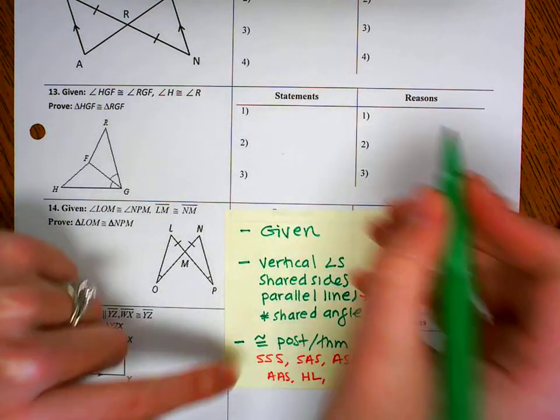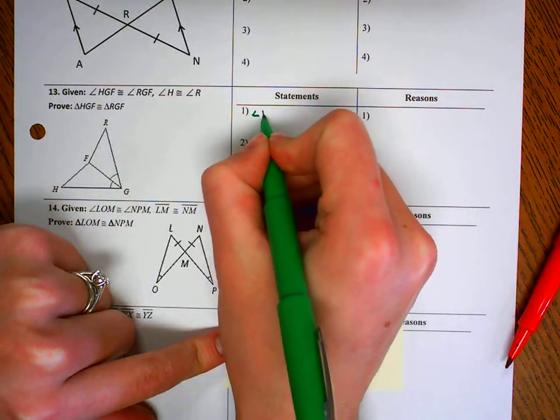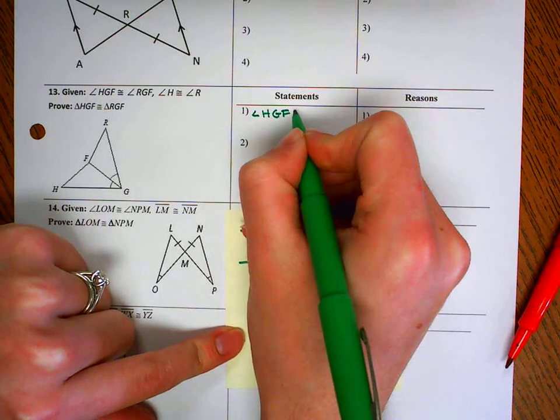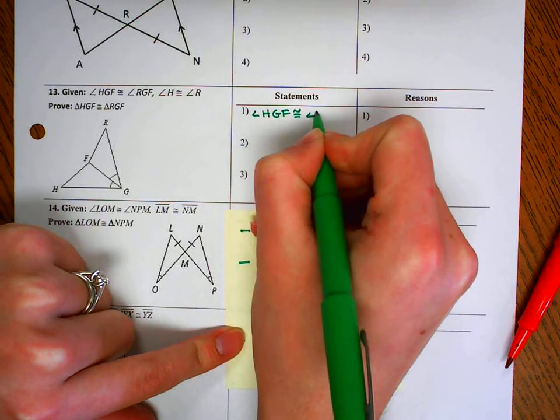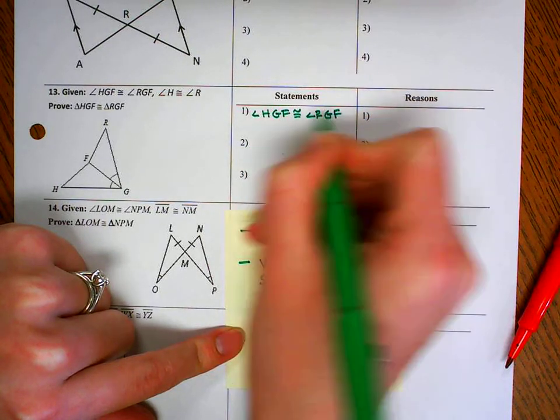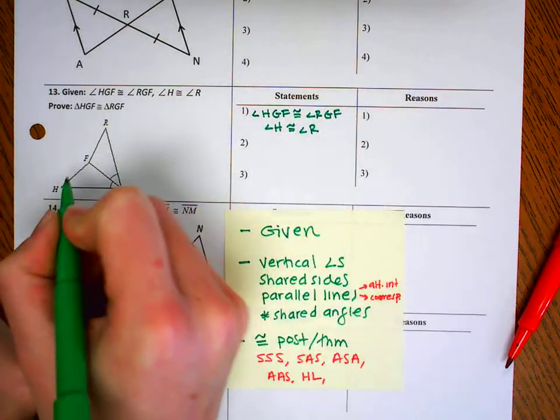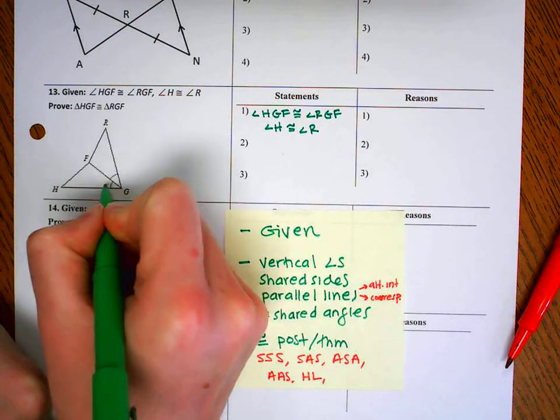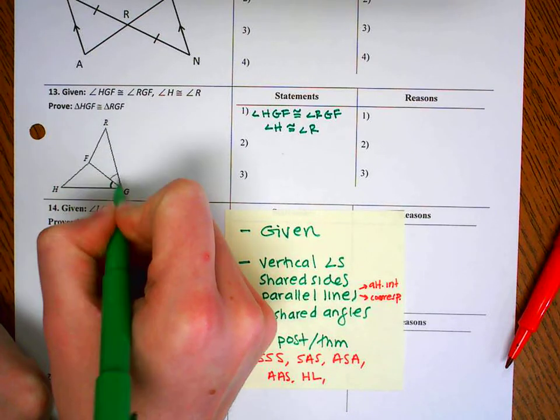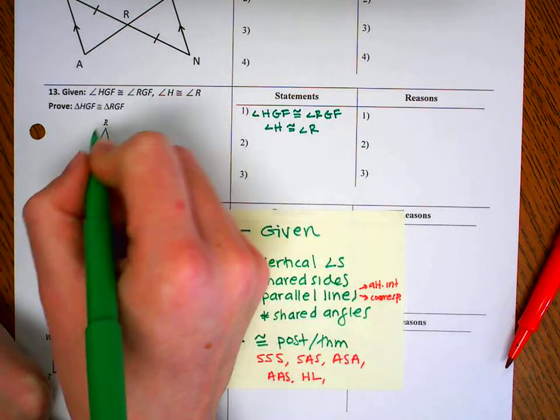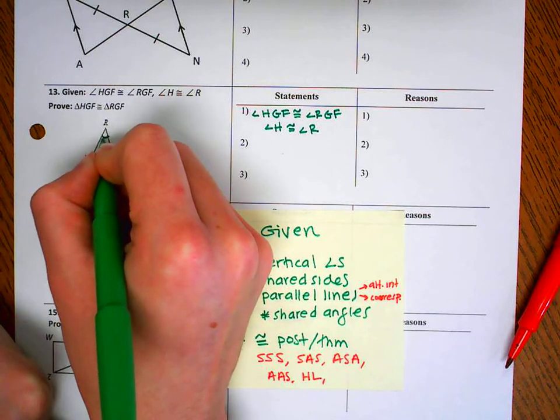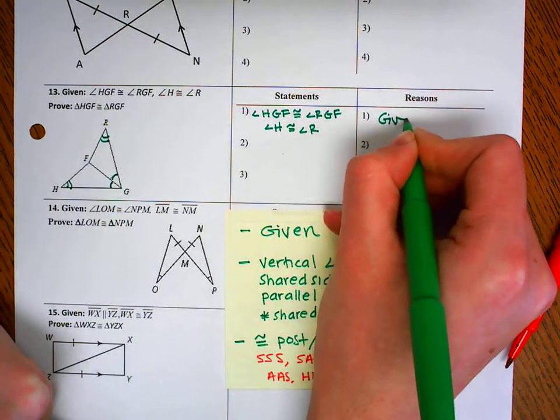Okay, number 13. Let's start with our given. So we have the angle HGF is congruent to angle RGF. And angle H is congruent to angle R. So HGF, here it is, RGF, here it is, H is congruent to R. So that's all given, and it's in our picture now.